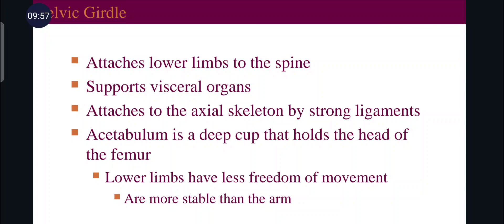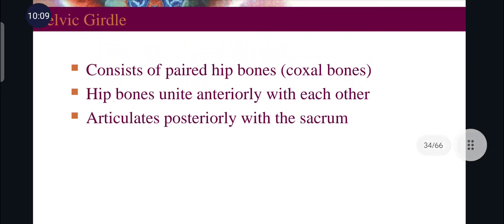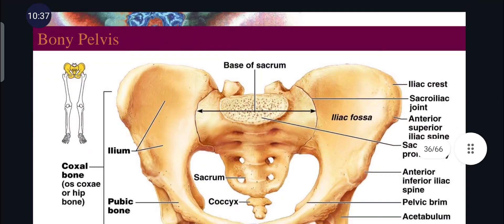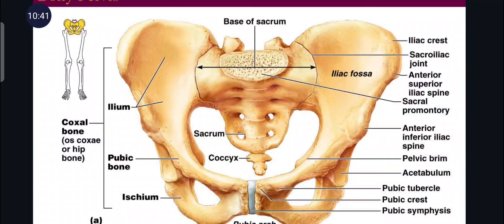The pelvic girdle consists of a deep cup-shaped acetabulum cavity that holds the head of the femur. Lower limbs have less freedom of movement. The pelvic girdle consists of paired hip bones, also known as coxal bones, which unite anteriorly with each other and articulate posteriorly with the sacrum. The bony pelvis forms a deep basin-like structure — the pelvic basin — formed by the coxal bones, sacrum, and coccyx. The two wings are formed by the pelvic bones, and the posterior wall is formed by the sacrum.